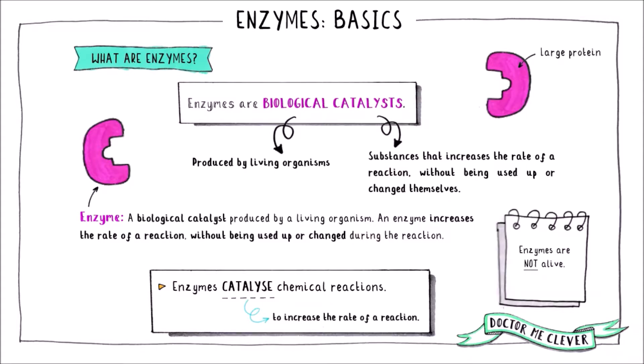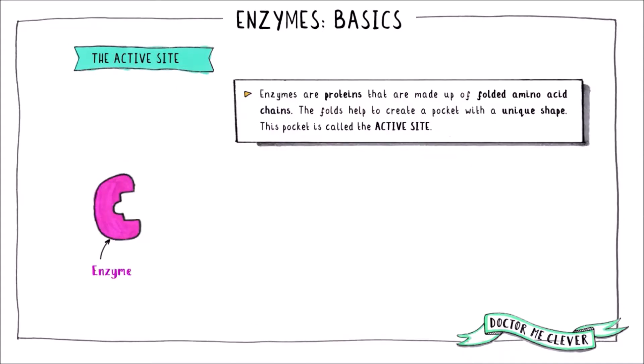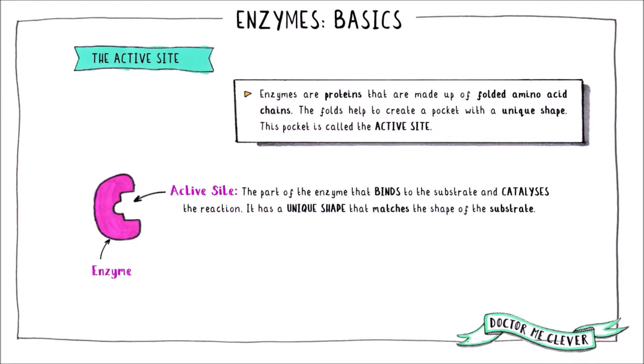It's also important to remember that enzymes are not alive. Enzymes are actually proteins and they're made from chains of amino acids. These chains are folded to create an enzyme with a pocket that has a unique shape, and this pocket is called the active site. The active site binds to a molecule with a complementary shape, and this molecule is called the substrate — it's the molecule that is changed during the enzymatic reaction.